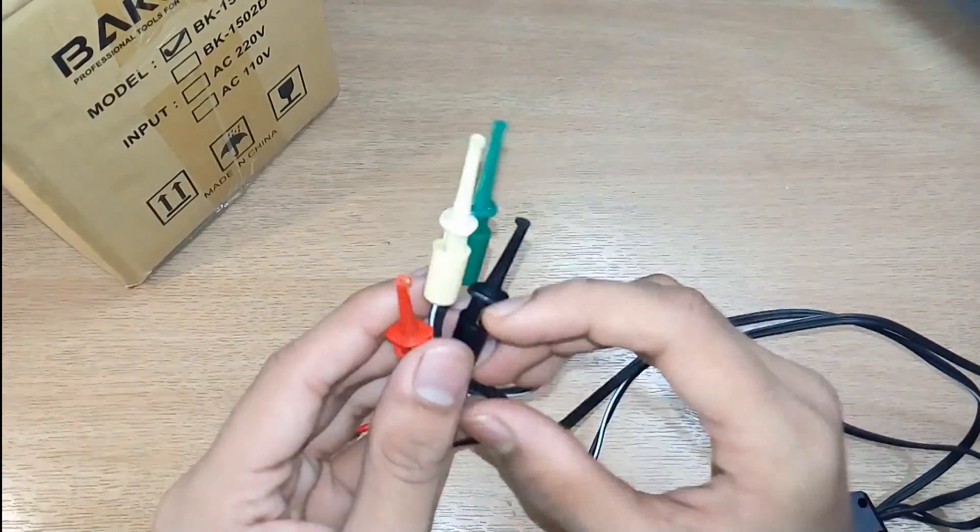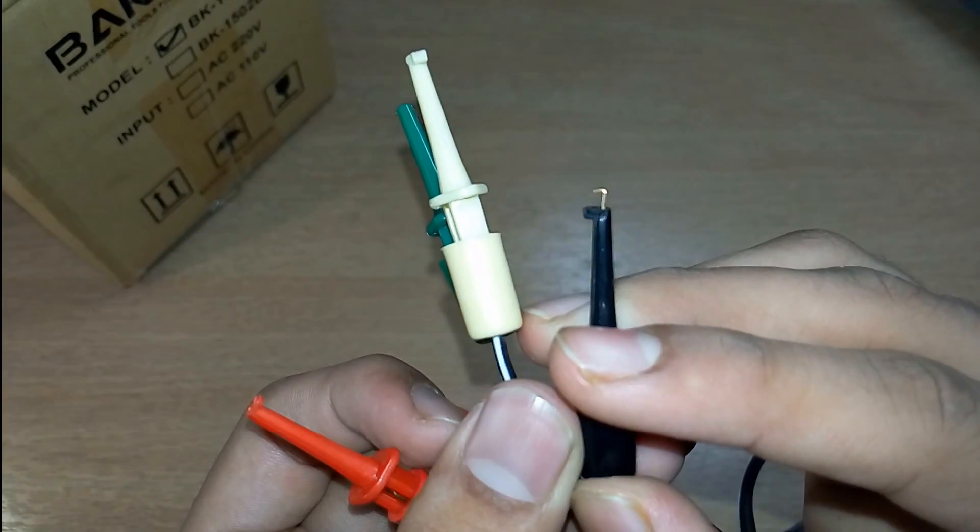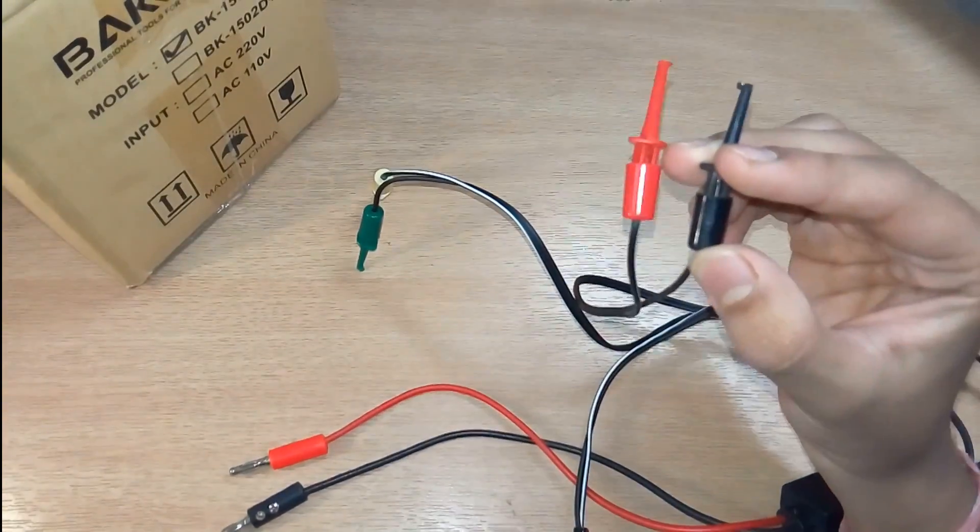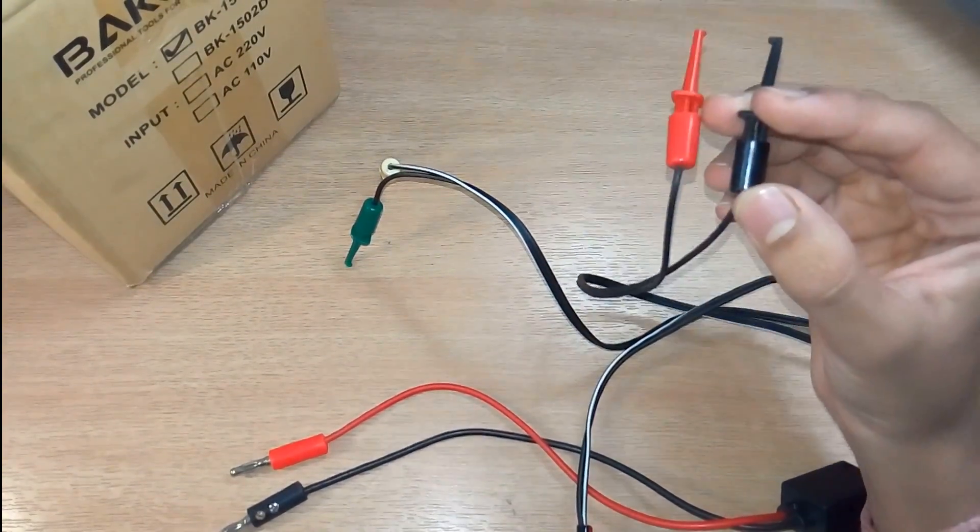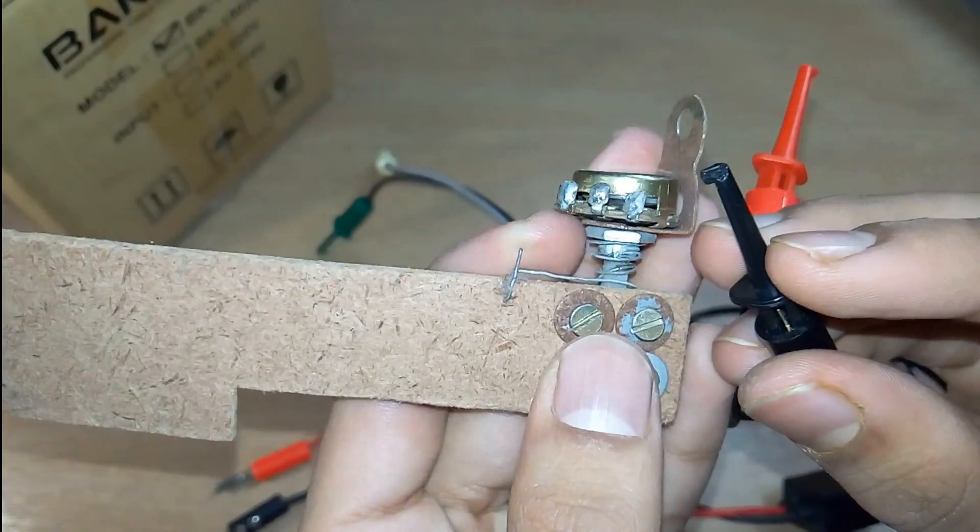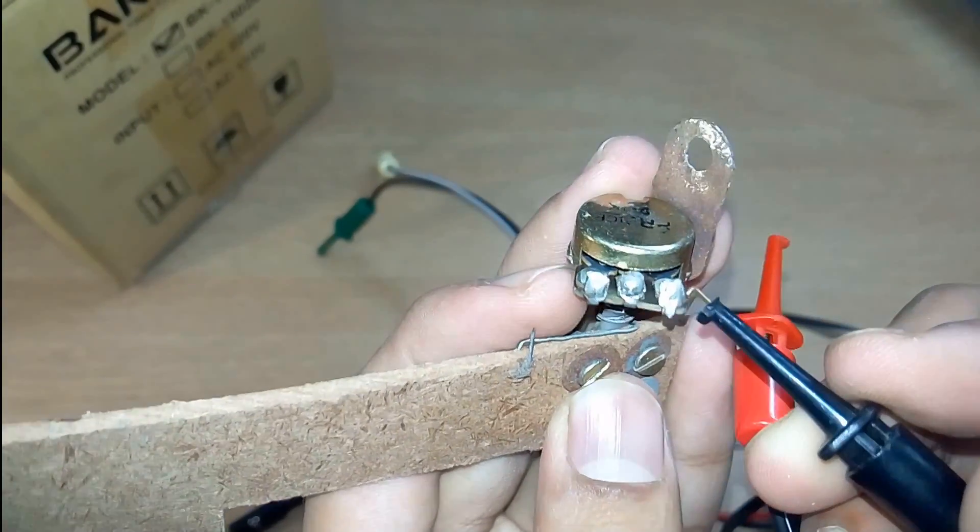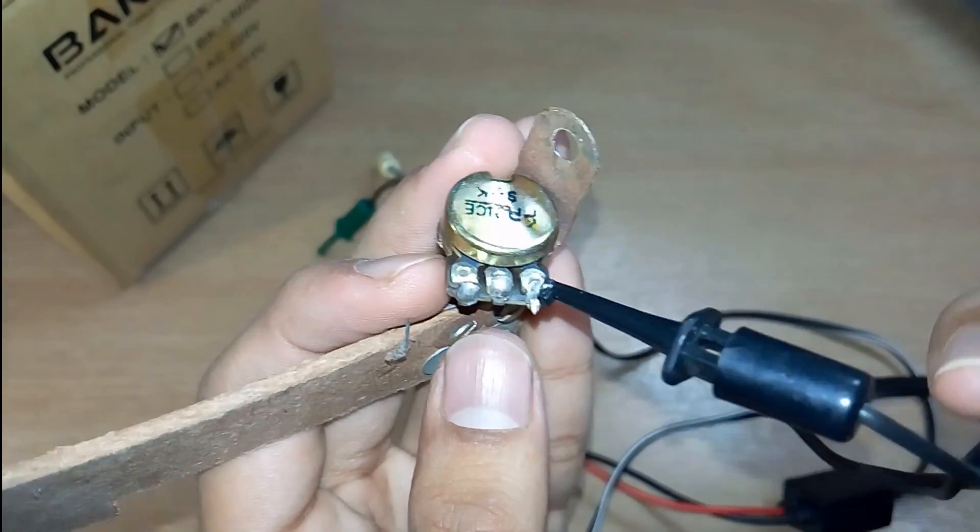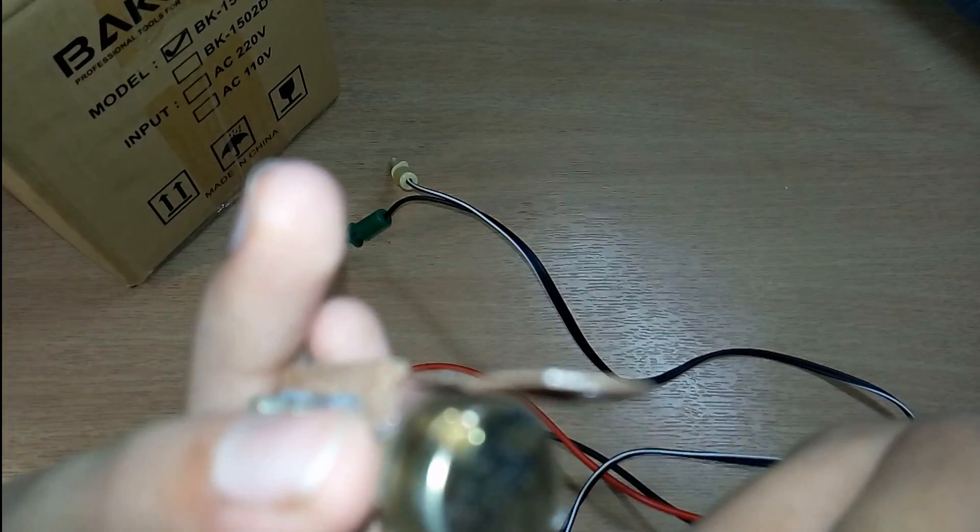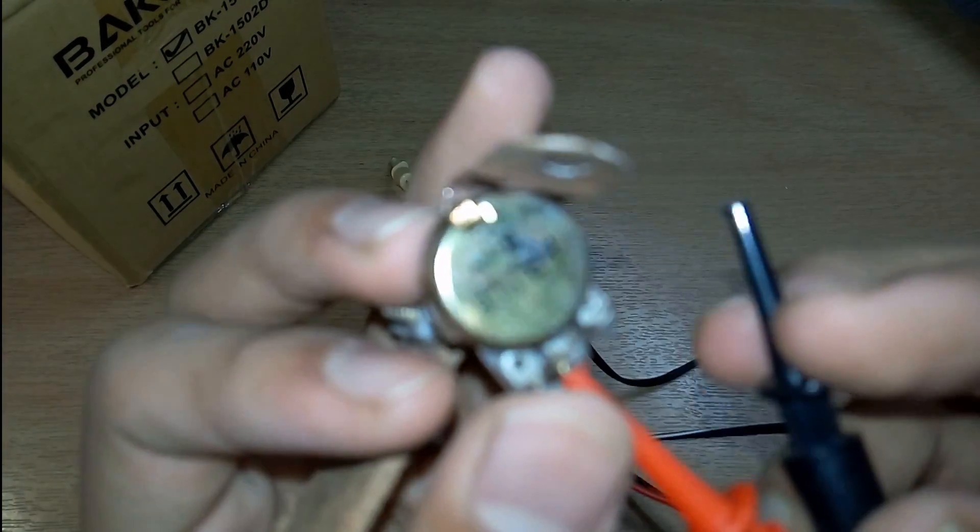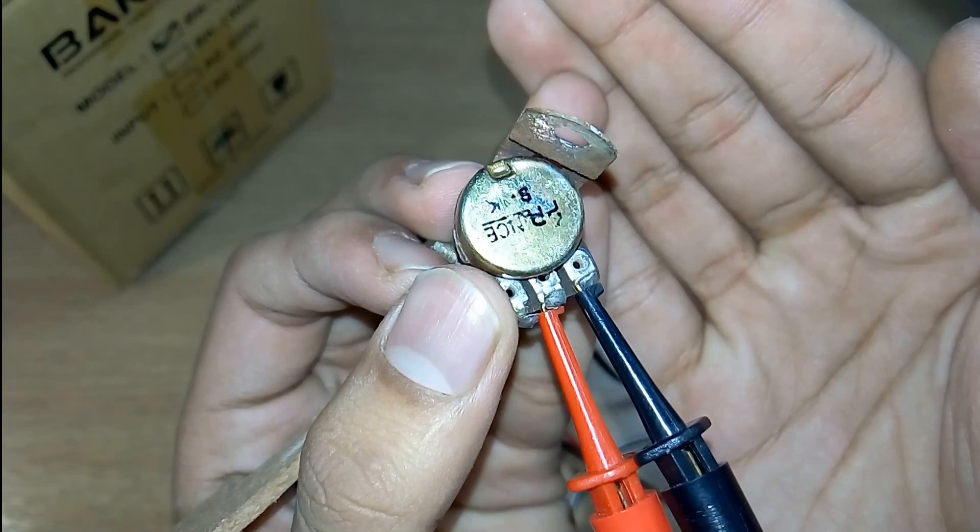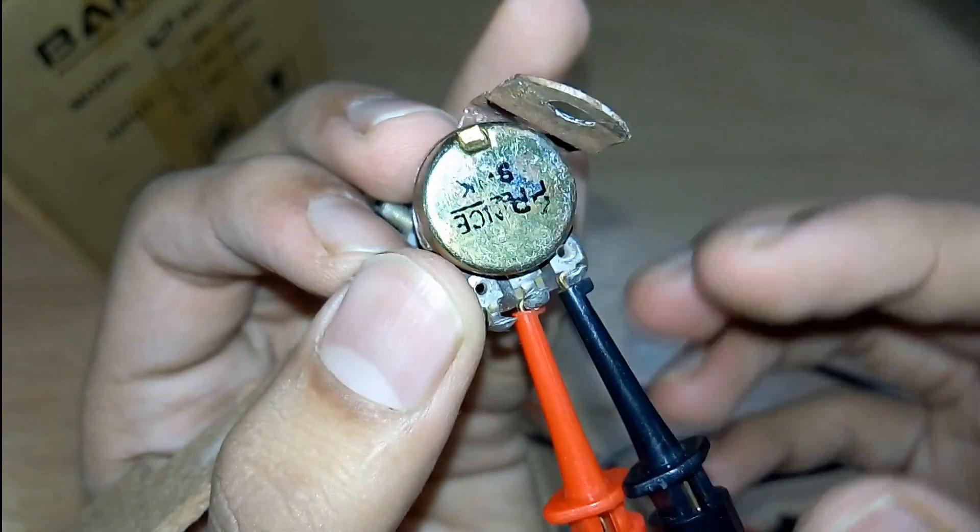Here we have different types of connectors that are basically used for connecting components. For example, if this is a potentiometer and we want to connect it without making any real soldering, we can connect this here. So we have connected it here. This is something pretty easy.